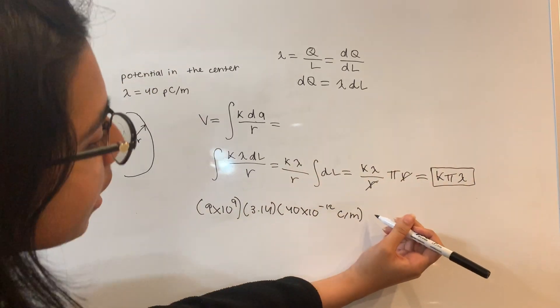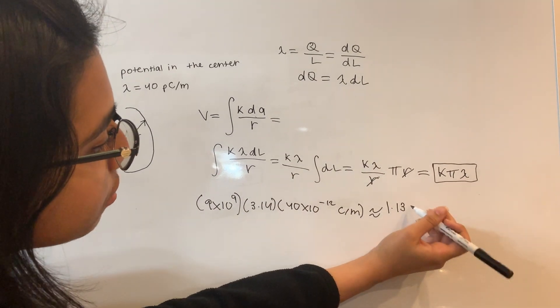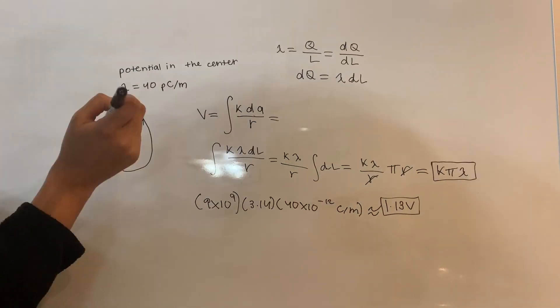So you multiply this all out and, if I remember correctly, you should get approximately 1.13 volts is the potential at this particular location.